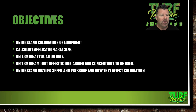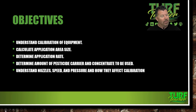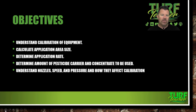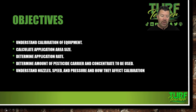We're also going to understand calibration of equipment. When do we calibrate it? If you read these textbooks that the Department of Agriculture gives you, you're actually supposed to calibrate your equipment from job to job. I highly recommend at least calibrating it once a day, and it needs to be the person that's going to use the equipment who calibrates it. We're going to calculate application area size, determine an application rate, and then determine the amount of pesticide carrier and concentrate to be used. We're also going to understand nozzles, speed, and pressure, and how they affect calibration. Those are your objectives for this course.